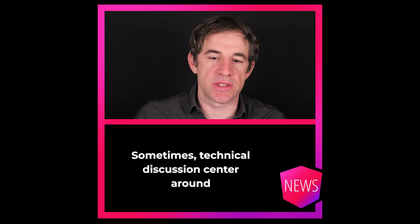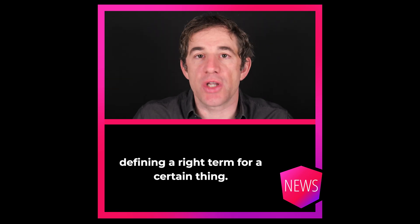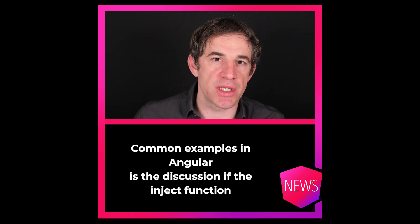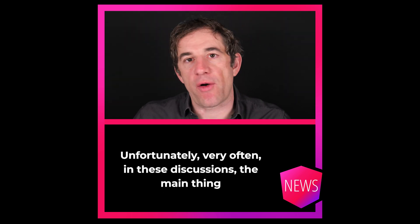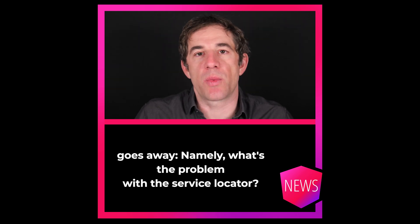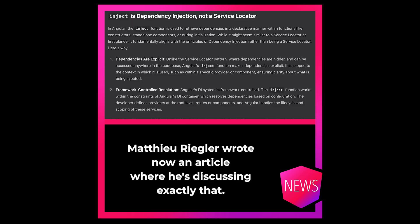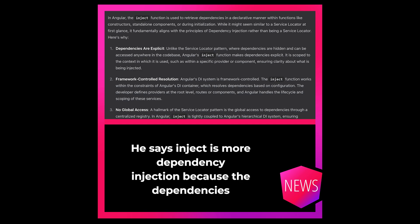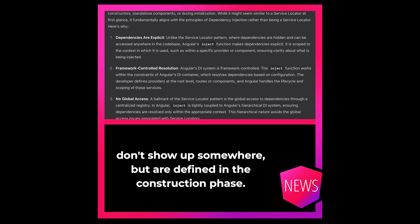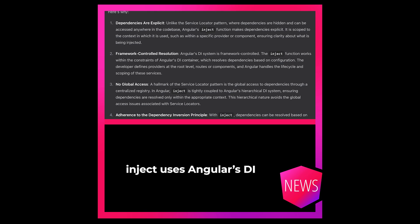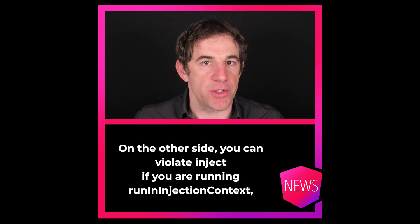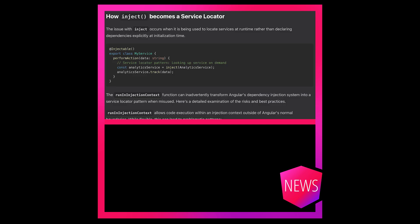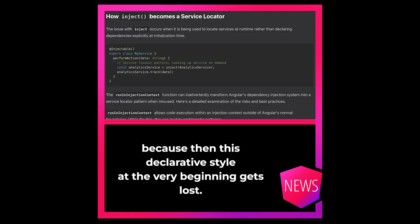Sometimes technical discussions center around defining the right term for a certain thing. A common example in Angular is the discussion of whether the inject function is a service locator pattern or dependency injection. Unfortunately, very often in these discussions, the main thing gets lost — namely, what's the problem with the service locator? Matthew Riegler wrote an article discussing exactly that. He says inject is more dependency injection because the dependencies don't show up somewhere arbitrary but are defined in the construction phase. Inject uses Angular's DI and we can separate the implementation from what the consumer requires. On the other side, you can violate inject if you are running in an injection context, because then this declarative style at the very beginning gets lost.